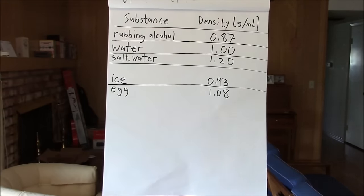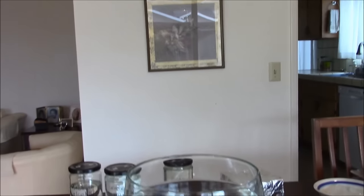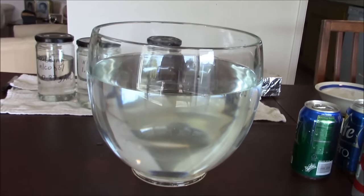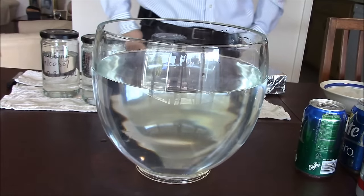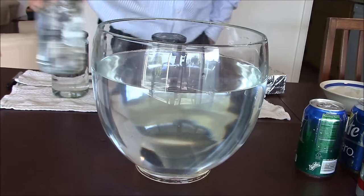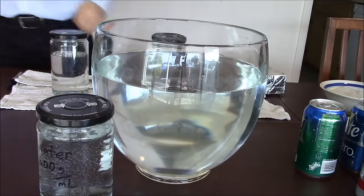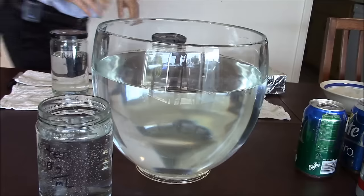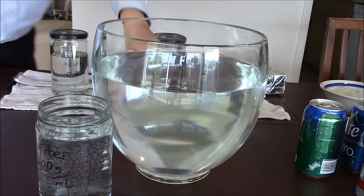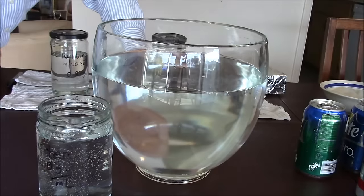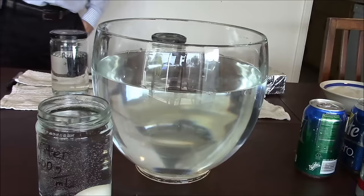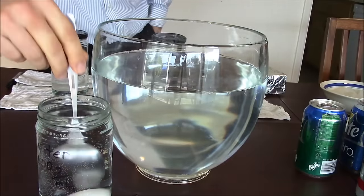I'm going to adjust the camera to show you these demonstrations. Water has a density of 1 gram per milliliter and an egg has a density of 1.08 grams per milliliter. So when you put an egg into regular water it drops straight to the bottom, which makes sense — the egg has greater density than water.